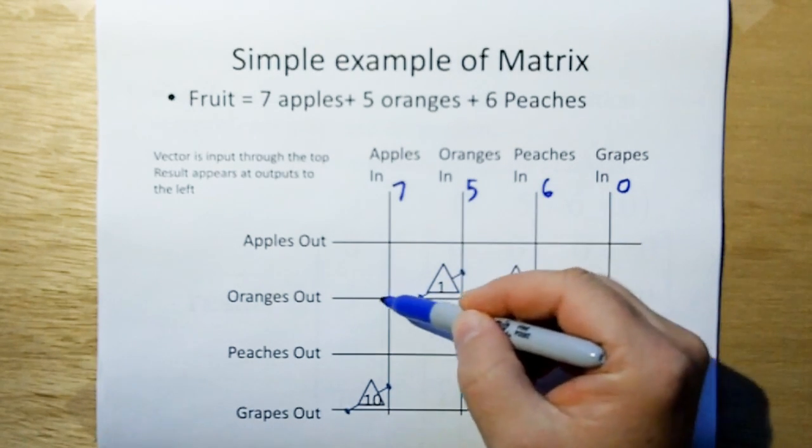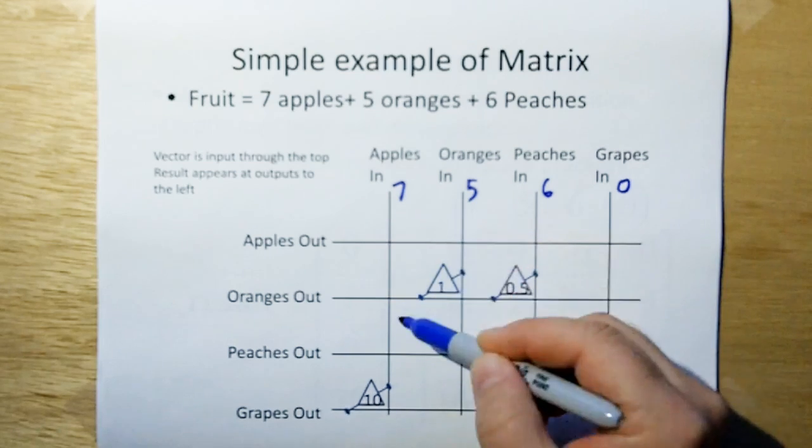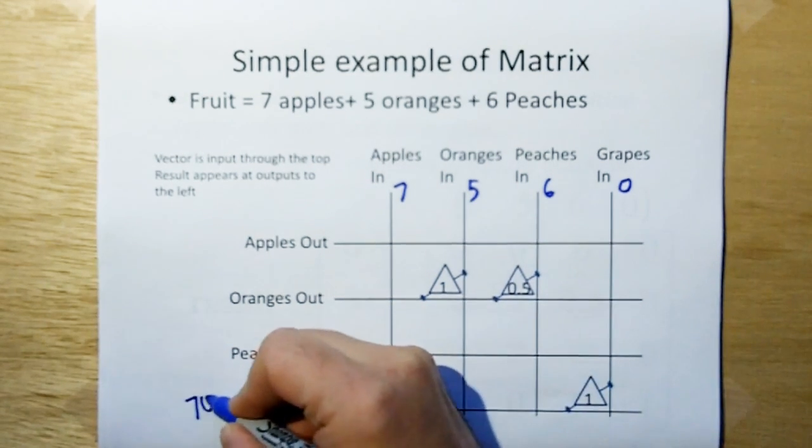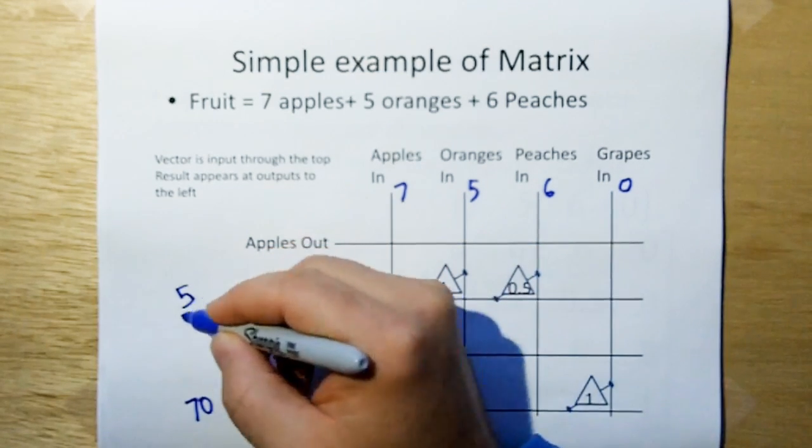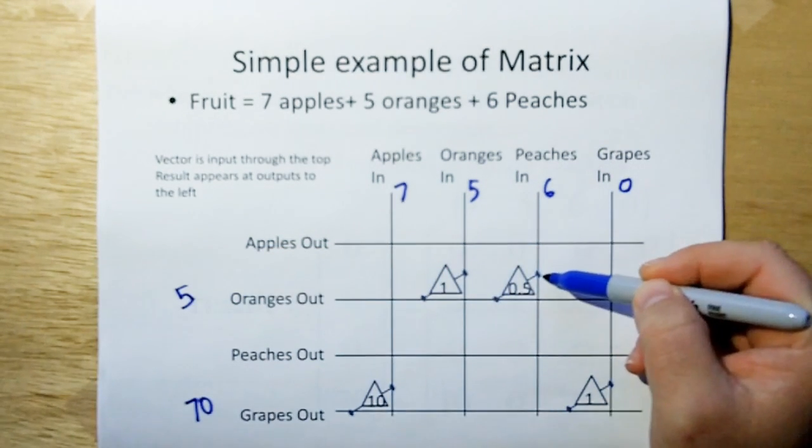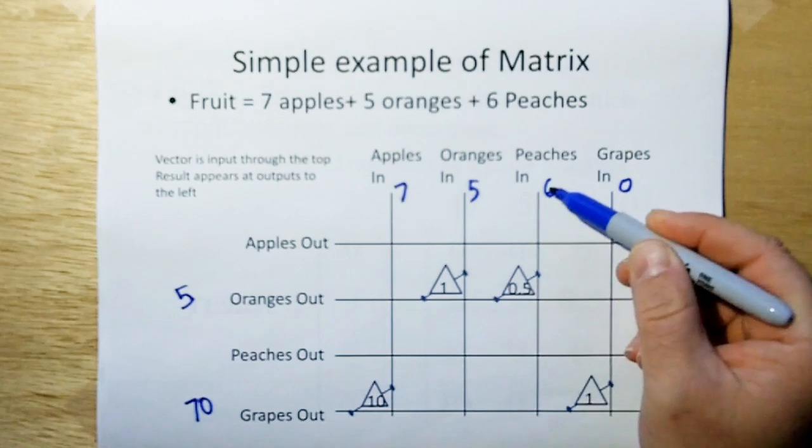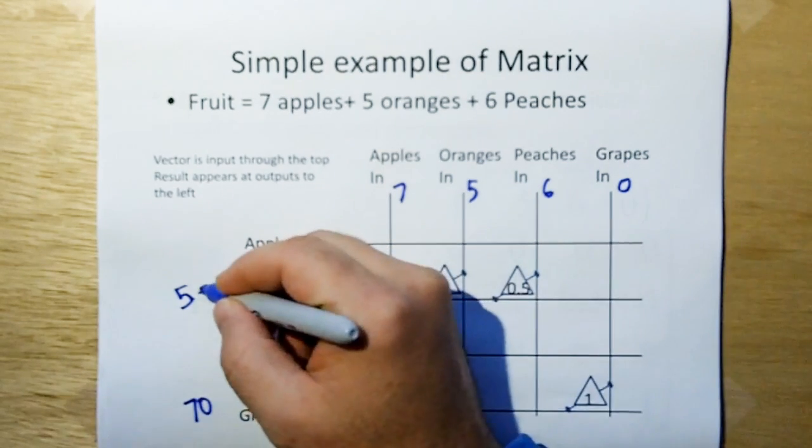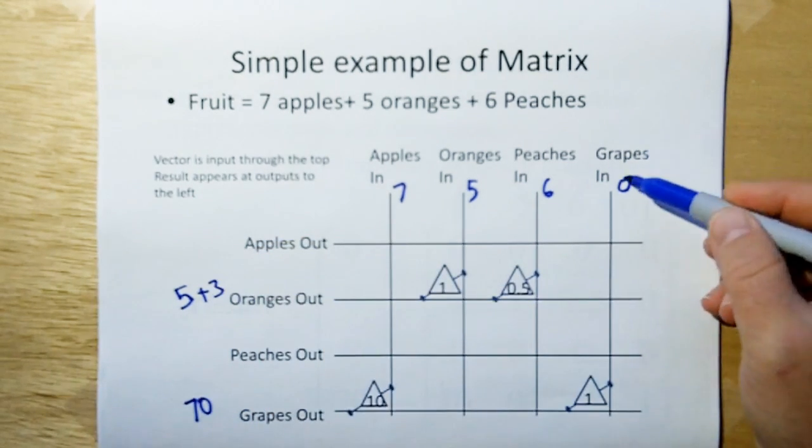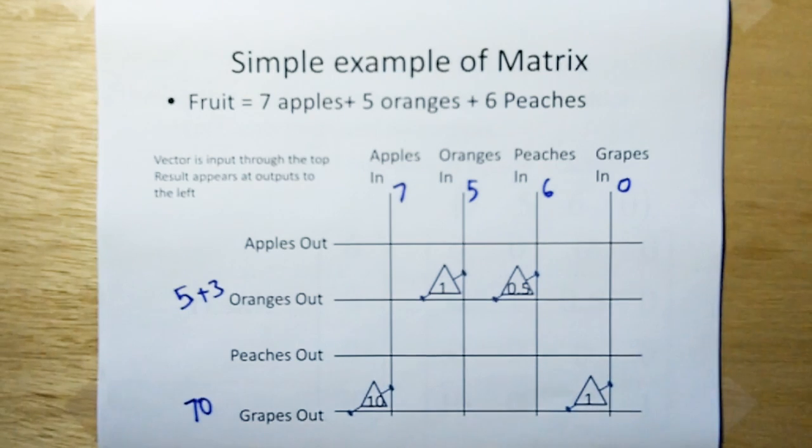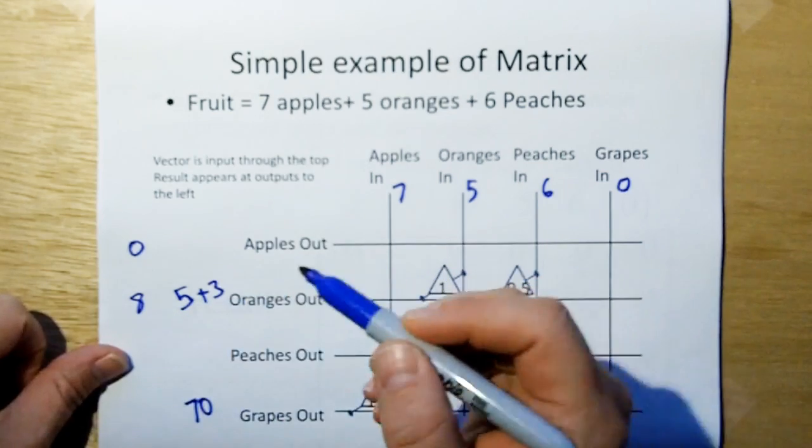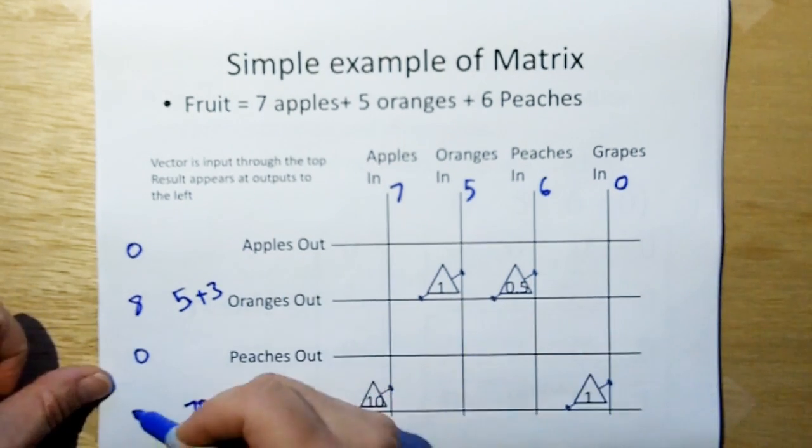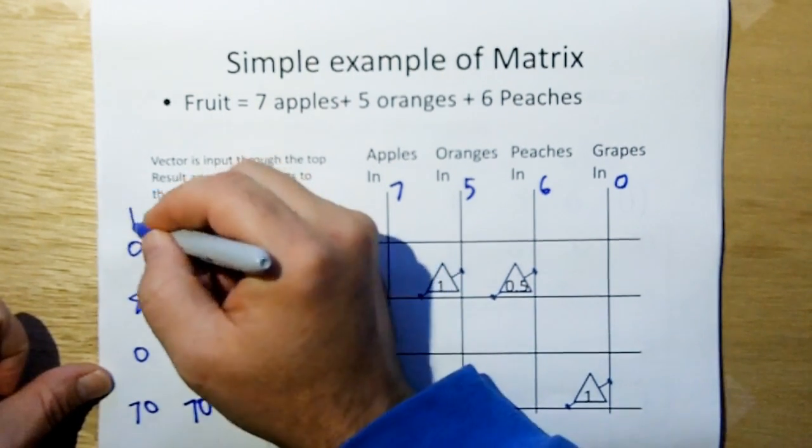If we put seven apples in and five oranges here and six peaches here, because there's no grape, the grapes are assumed to be zero. Seven times ten gives us seventy grapes out. Five only connects here, so we get five oranges out. Peaches in connects here, so we get three oranges out. Our output vector is going to be zero apples, eight oranges, zero peaches, and seventy grapes.